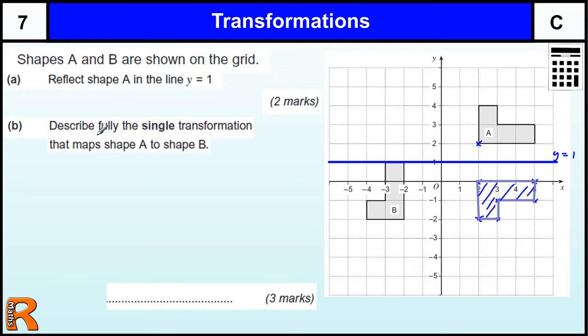Now part B, we are asked to describe fully the single transformation that maps A onto B. So we are going from A to B this time. Now you might think it is a reflection, but it is not a reflection. It is going to be a rotation.